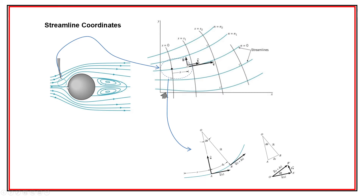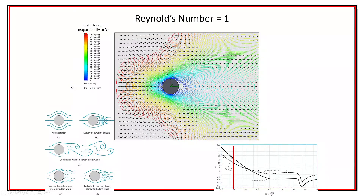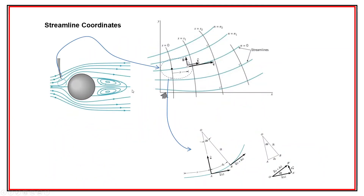Something very important to introduce and keep hammering home is the idea of the stagnation point. There could be multiple stagnation points, but the one we're most concerned about is when a flow approaches an object - there's a point where that particle has to stop. It has to go either up or down; it can't continue straight, and therefore it's called a stagnation point. It's going to be a pretty important concept for us.